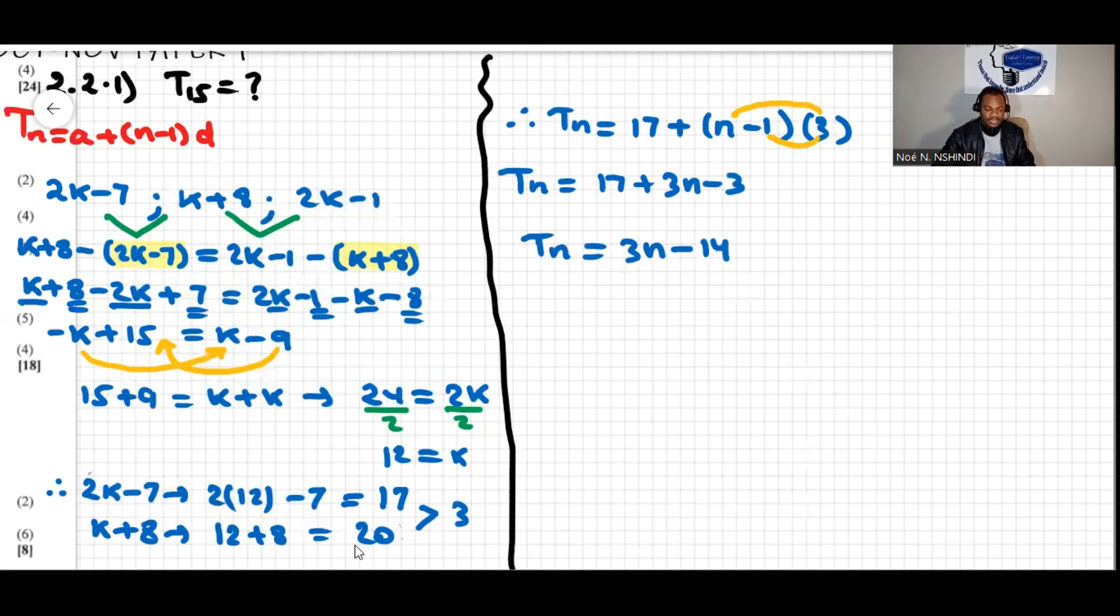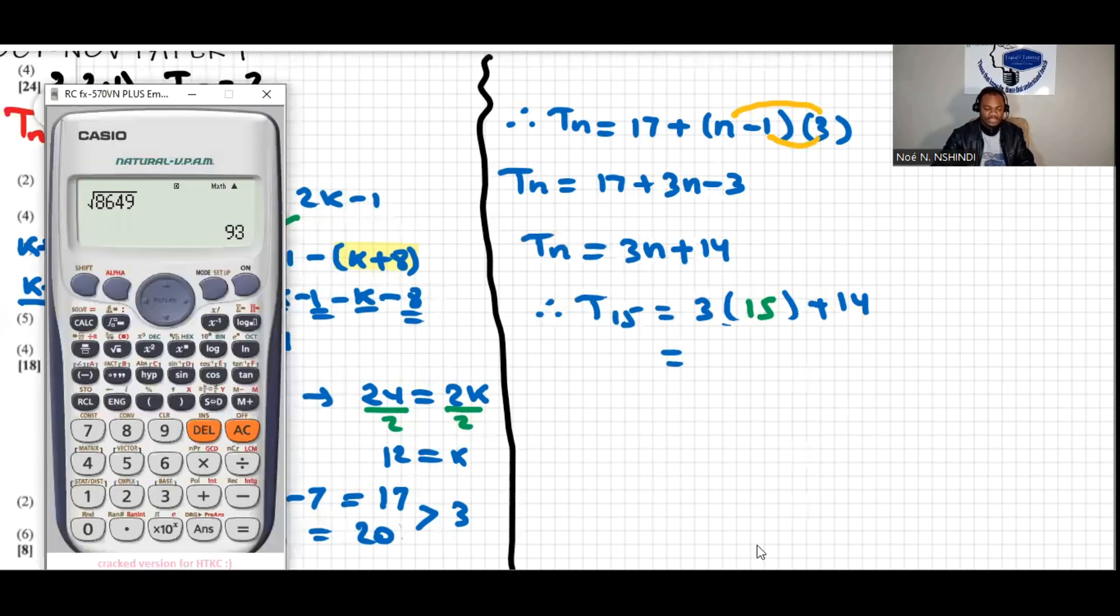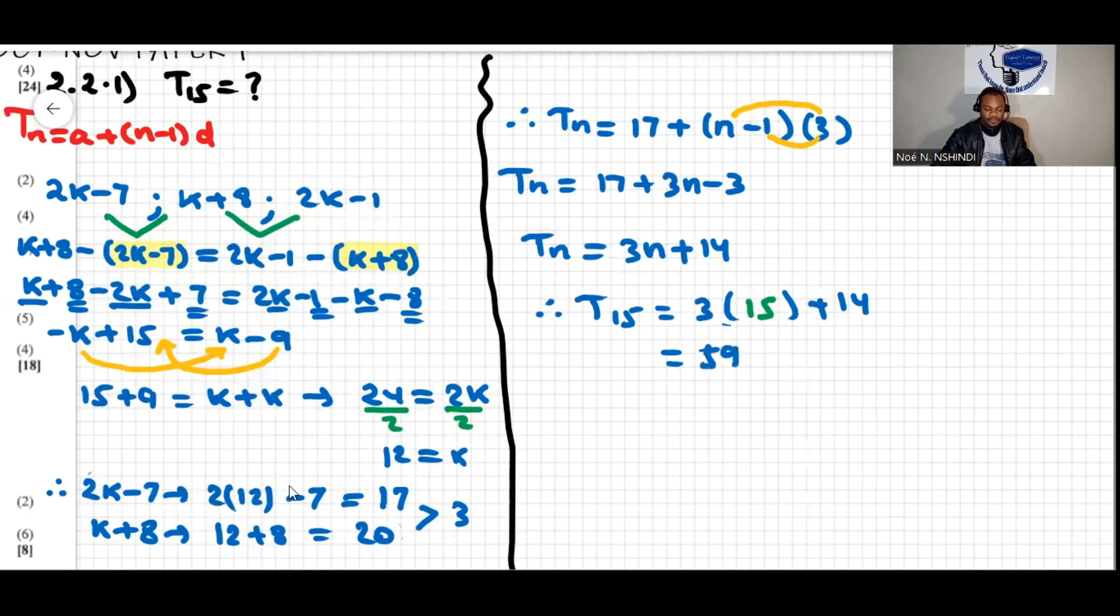Because we're looking for T15, then we'll say therefore T15 will be equal to 3(15) plus 14. 3 times 15 is 45, 45 plus 14 equals 59. Therefore T15 is just equal to 59.